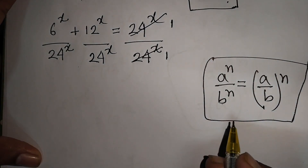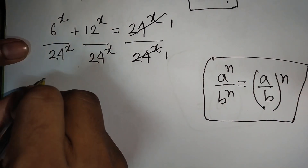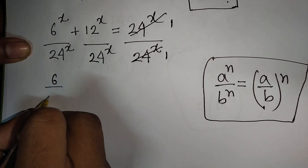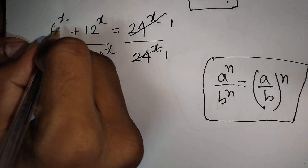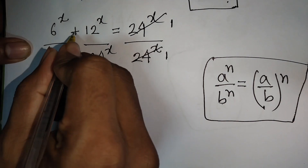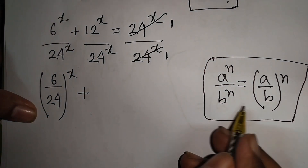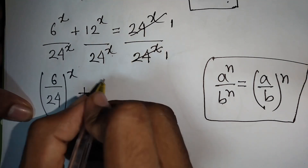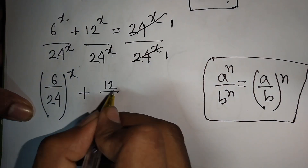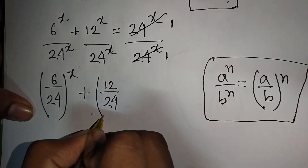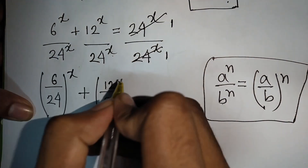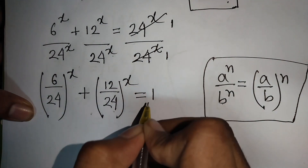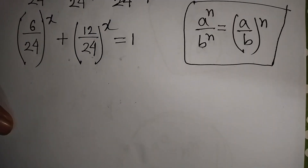According to this rule, we can write (6/24) to the power x plus (12/24) to the power x is equal to 1.